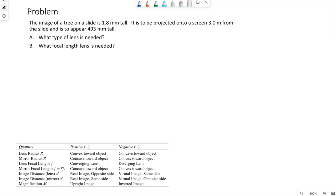We have another example problem here. The image of a tree on a slide is 1.8 millimeters tall. It is to be projected onto a screen 3 meters from the slide and is to appear 493 millimeters tall. What type of lens is needed? What focal length of lens is needed?